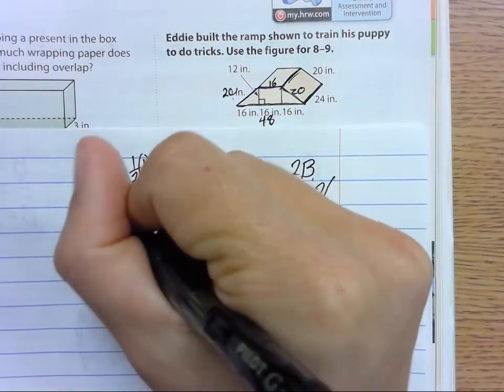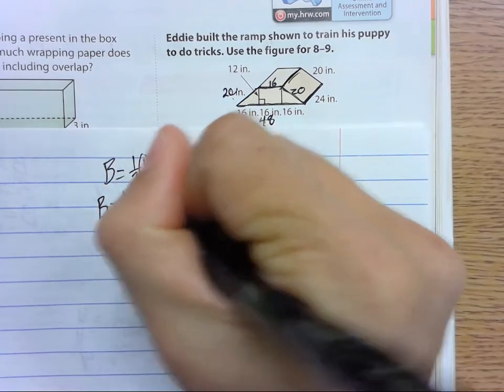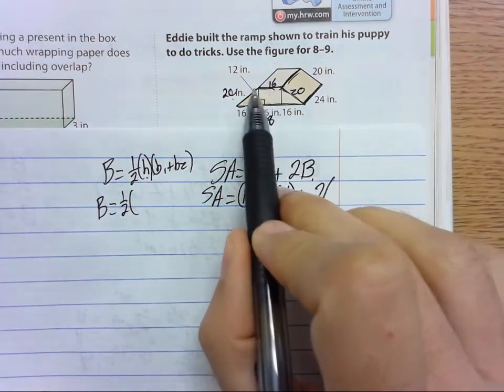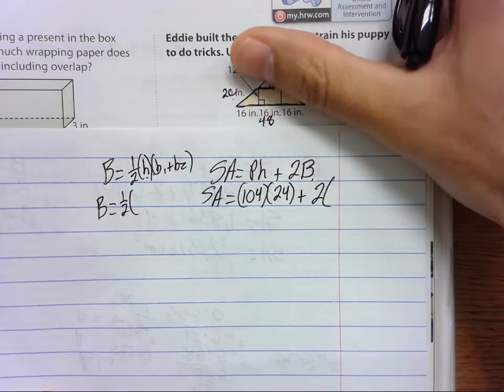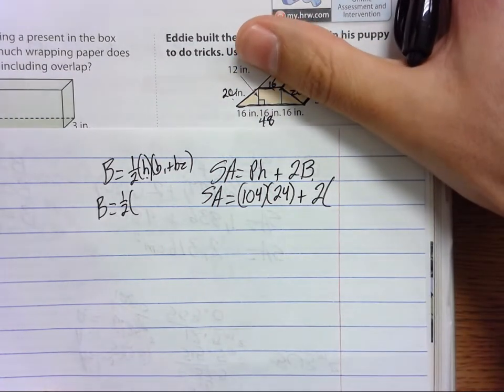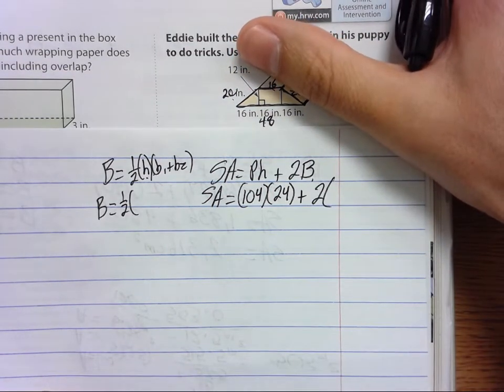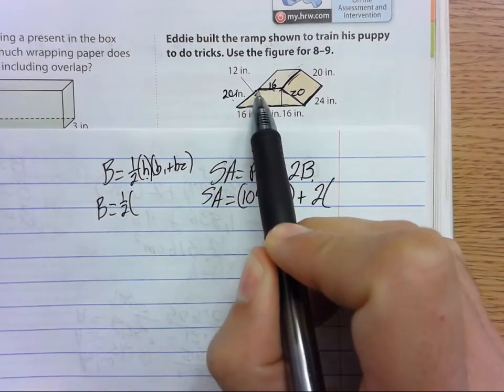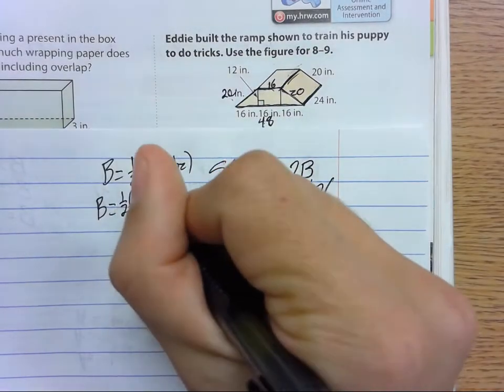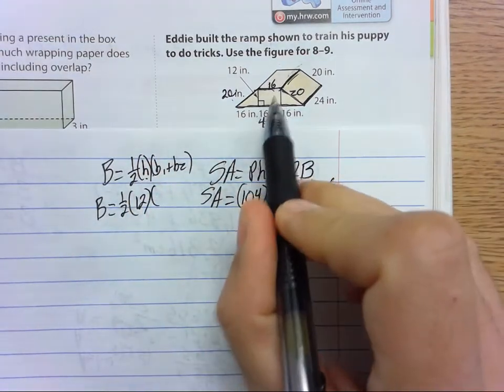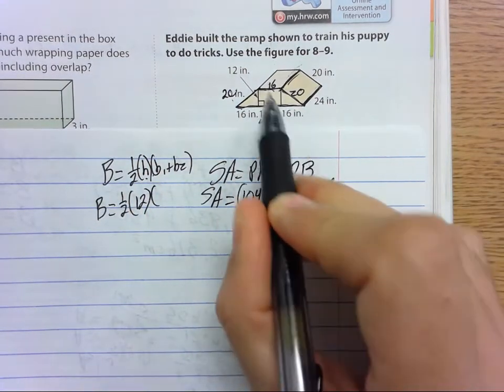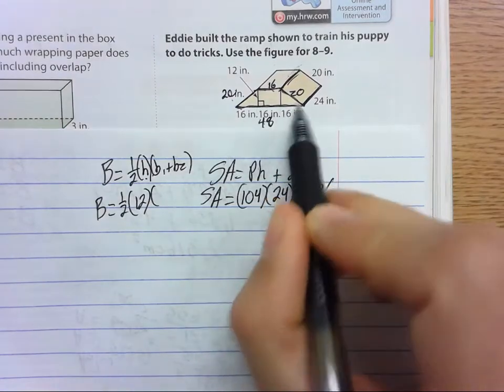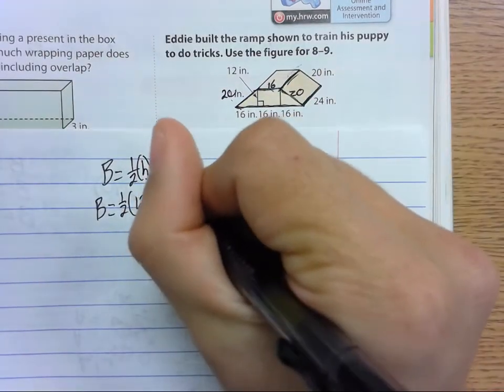So area of the base is half of—what's the height of the trapezoid? We're just looking at the trapezoid, ignoring all of this. The height is the distance between the two bases. Here's the base and here's the base, so here is the height, and the height is 12. Base 1 we can say is 48, and base 2 would be 16.